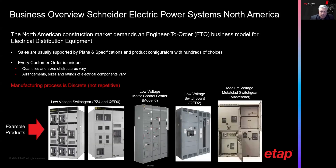These are some examples of some of the products that we make in the power systems division in North America. And as you can see, the arrangements are different, the sizes of the circuit breakers are different, and in some cases we have other devices other than circuit breakers — for example, in our motor control center with drives and starters. The idea is that we're dealing with a very diverse set of products, and the configurations of those products can be different for every customer.